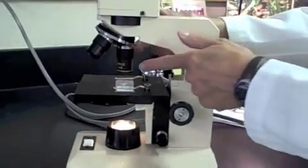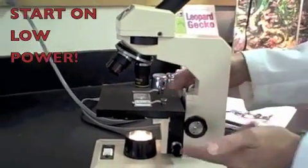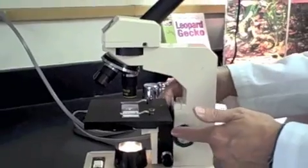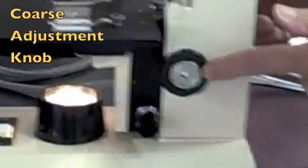We always start on one of the low power objective lenses and we use this big knob. What's that big knob called? It's called the coarse adjustment knob.